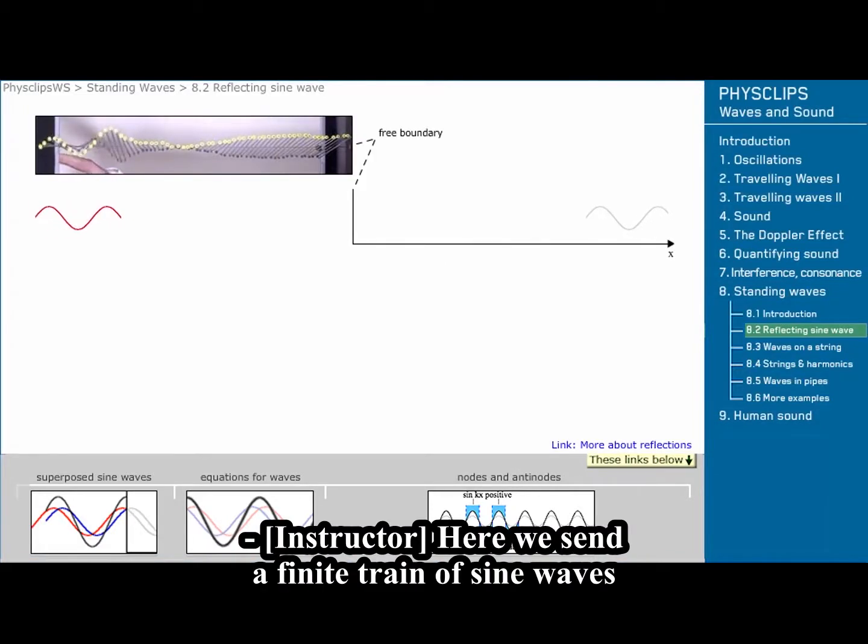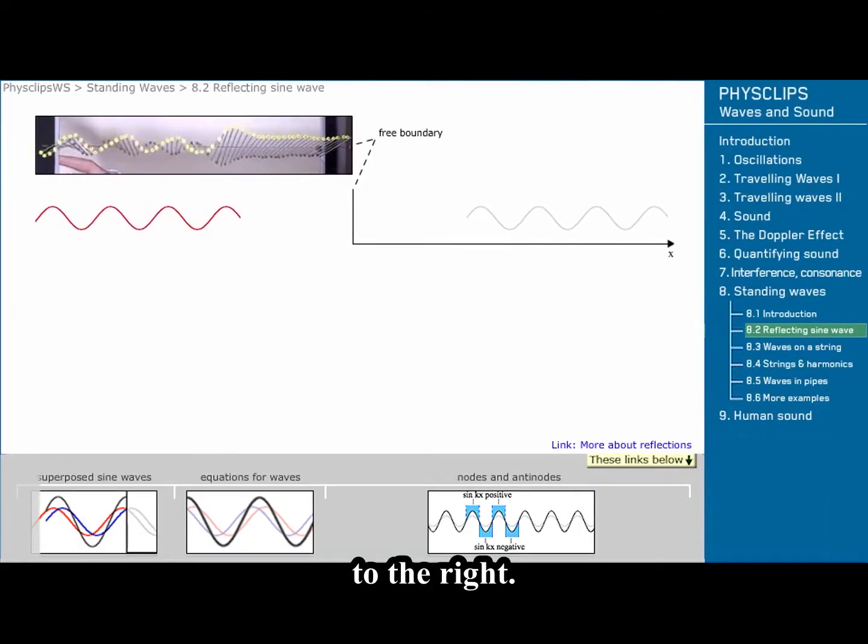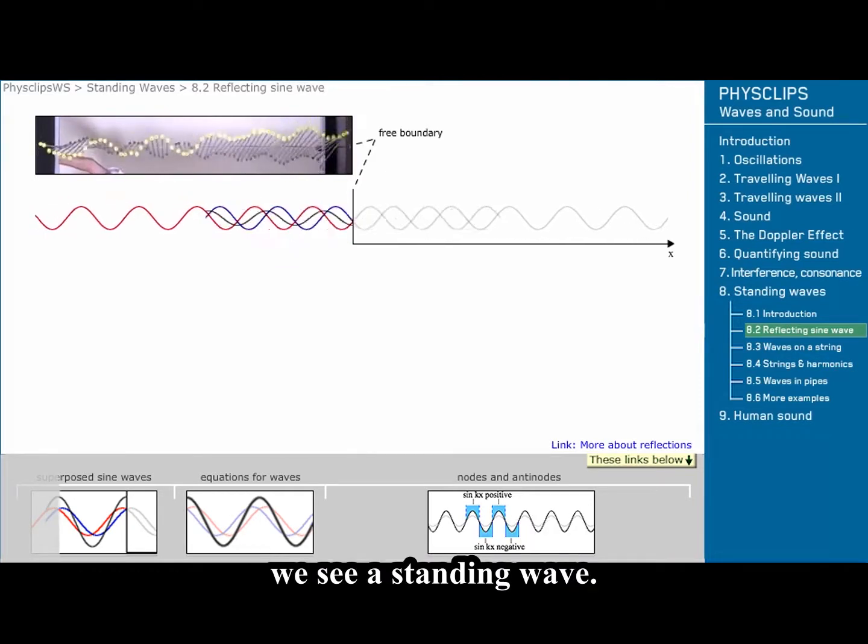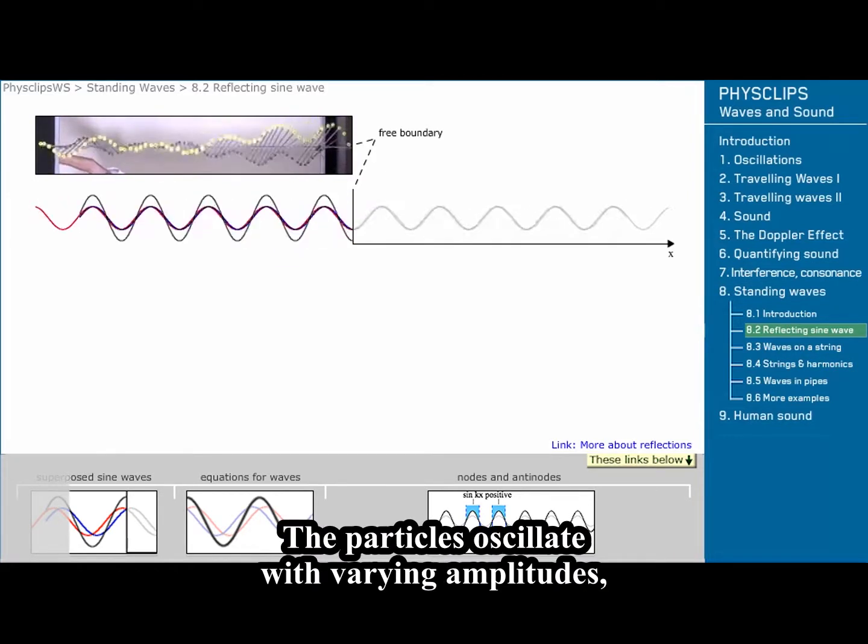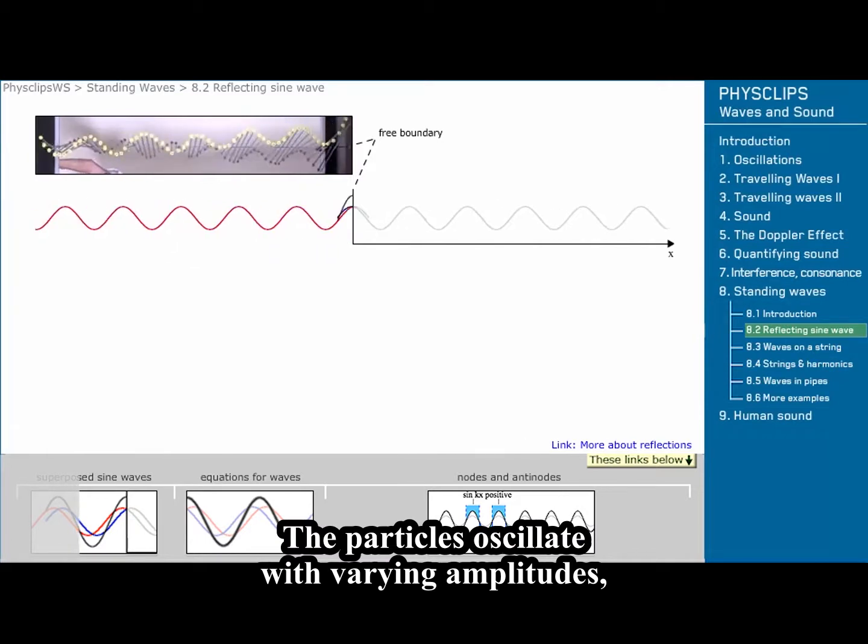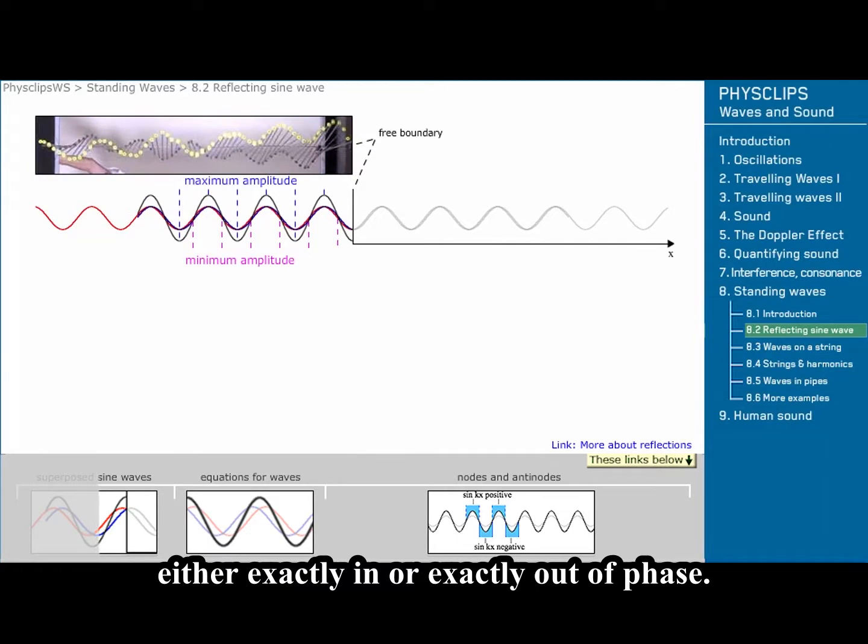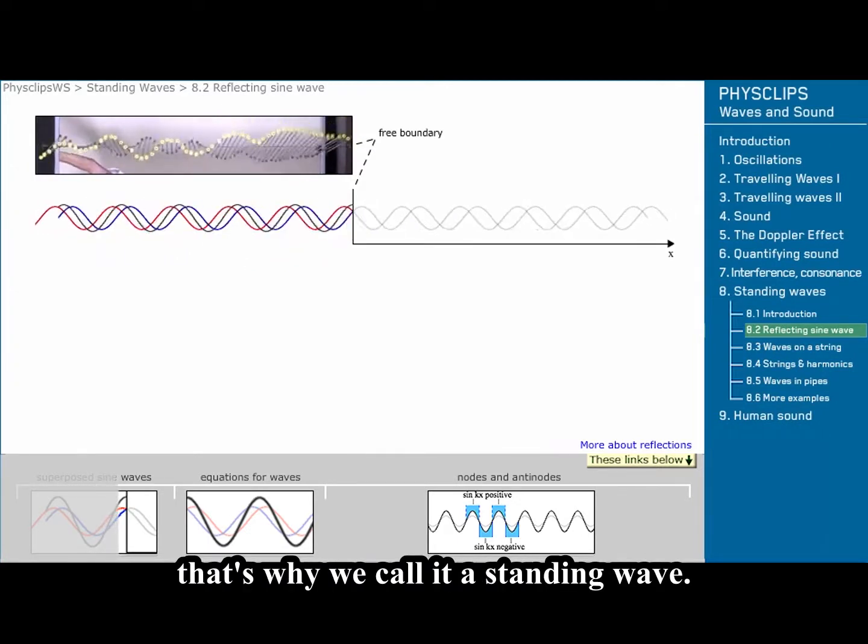Here we send a finite train of sine waves to the right. During the time while the two waves are superposed, we see a standing wave. The particles oscillate with varying amplitudes, either exactly in or exactly out of phase. But the wave is going nowhere. That's why we call it a standing wave.